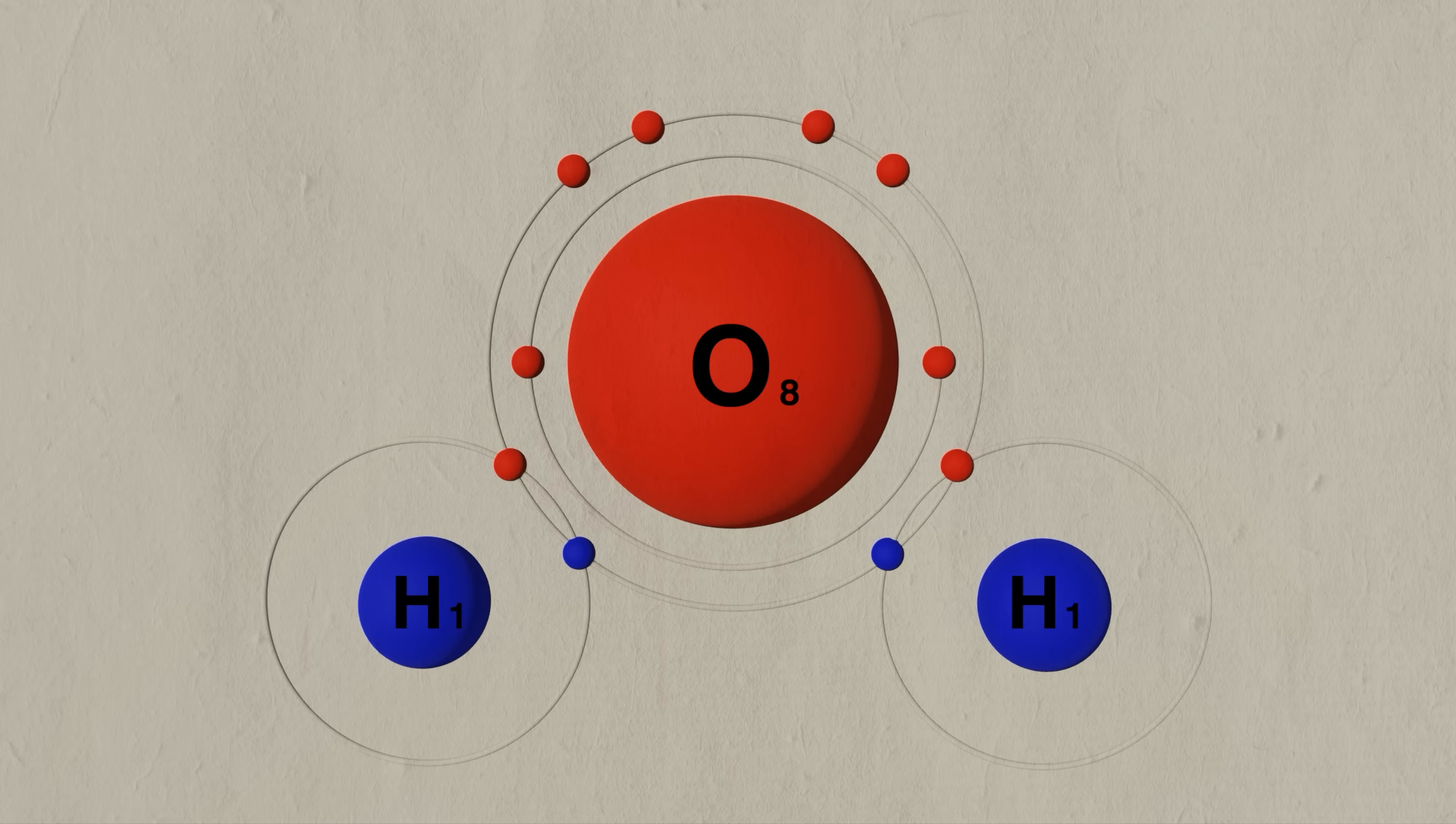However, these electrons are not shared equally. Because the oxygen atom is more electronegative, it pulls the electrons slightly closer to itself. This results in a slight negative charge near the oxygen, while the hydrogen side carries a slight positive charge.